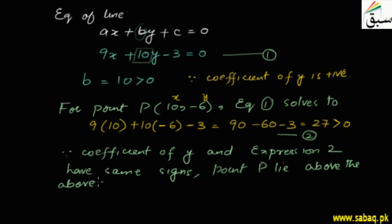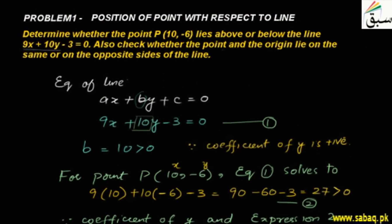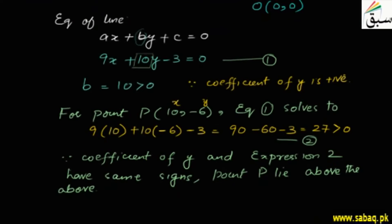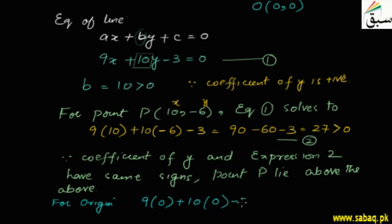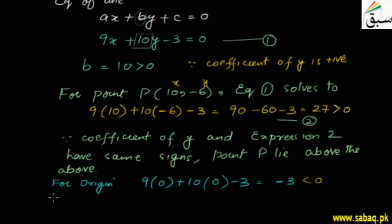Now we check the origin. To apply this concept to the origin, we substitute (0, 0) into the equation: 9 times 0, plus 10 times 0, minus 3. This gives minus 3, which is less than 0 — a negative value.